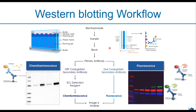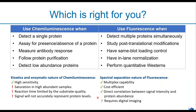Let us go through the workflow again. This is a simplified flowchart of Western blotting: it starts with electrophoresis to separate the proteins by molecular weight, then transfer the protein from the gel onto a membrane, then a blocking step to eliminate nonspecific binding and background, followed by primary antibody incubation, secondary antibody incubation or ECL substrate if doing chemiluminescence, and finally imaging and analysis.